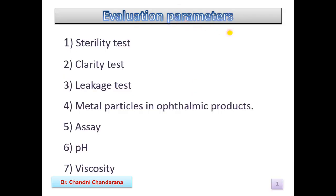These are the evaluation parameters: first, there will be a sterility test; then clarity test; leakage test; metal particles in ophthalmic products; we have to do an assay; and then we have to measure the pH as well as viscosity.